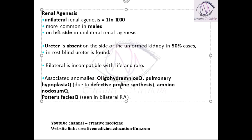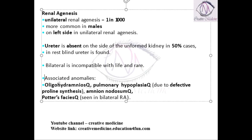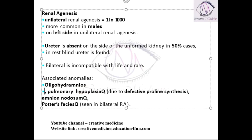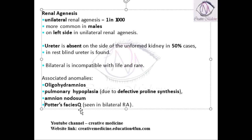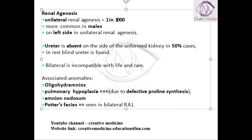Bilateral renal agenesis is associated with oligohydramnios, pulmonary hypoplasia, amnion nodosum, and Potter's sequence. Potter's sequence is mainly seen in bilateral renal agenesis. Pulmonary hypoplasia is mainly due to defective proline synthesis.